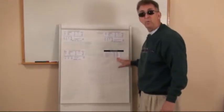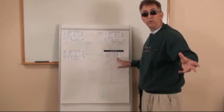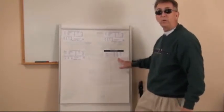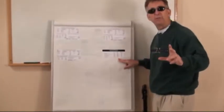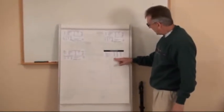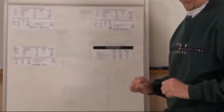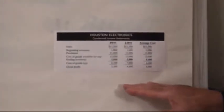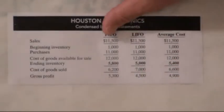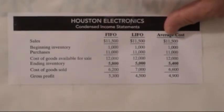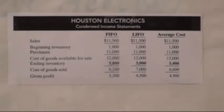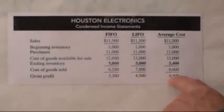Under generally accepted accounting principles and the consistency principle, you can't just wake up one morning and switch from one inventory method to another. You have to stick with what you've chosen, so think very carefully when starting your business — that's the job of a good accountant. Notice that all of these income figures were massaged depending on the method chosen. In reality, the real cash inflow was still $11,500 in sales and actual purchases were $11,000, so the net cash outflow was only $500.